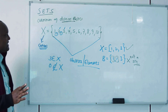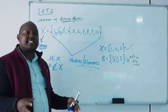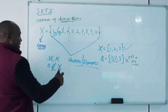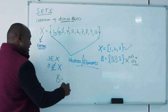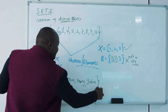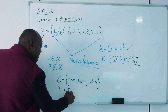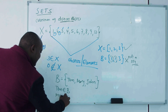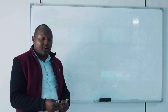Before we look at types of sets, I want to emphasize that a set can be a collection of any objects. For example, you can form a group and call it a set. You can have a set B of three members: Tom, Mary, and John.